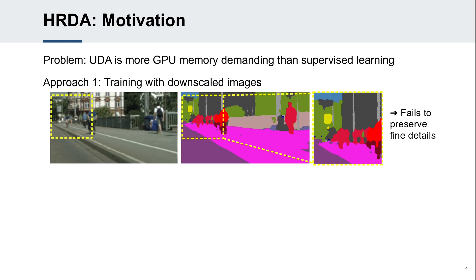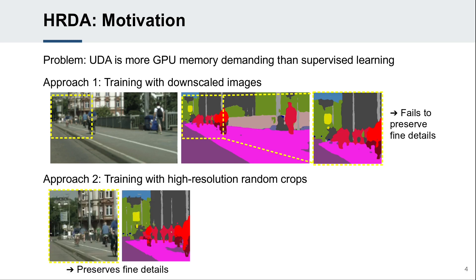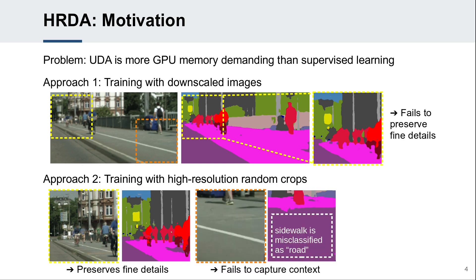However, naively learning UDA with full high-resolution images is often infeasible, as the resolution quadratically affects the memory consumption. A different approach is training with high-resolution random crops of the image. While this allows adapting small objects and preserving fine details, it limits the learned long-range context dependencies to the crop size.